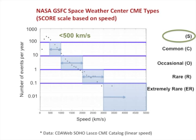The most numerous type of CMEs are those with speeds less than 300 miles per second. On average, CMEs with these speeds occur more than 100 times per year. We call these CMEs S-type.